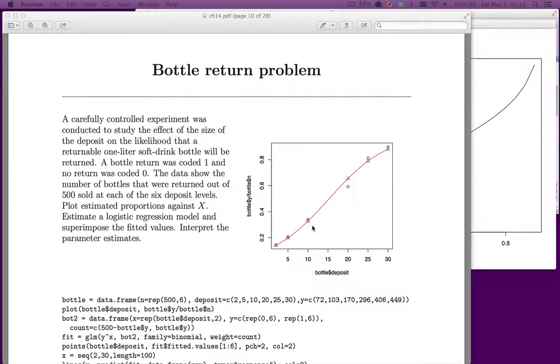Let's estimate a logistic regression model. So we have data from an experiment in this problem. The experiment was as follows. I guess we have some sort of a soft drink company and we have bottles. Now we're considering placing a deposit on these bottles to get consumers to return them.